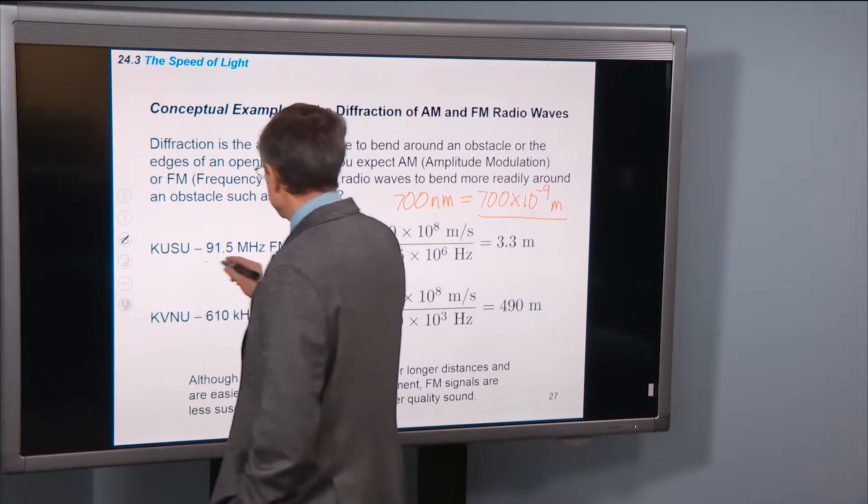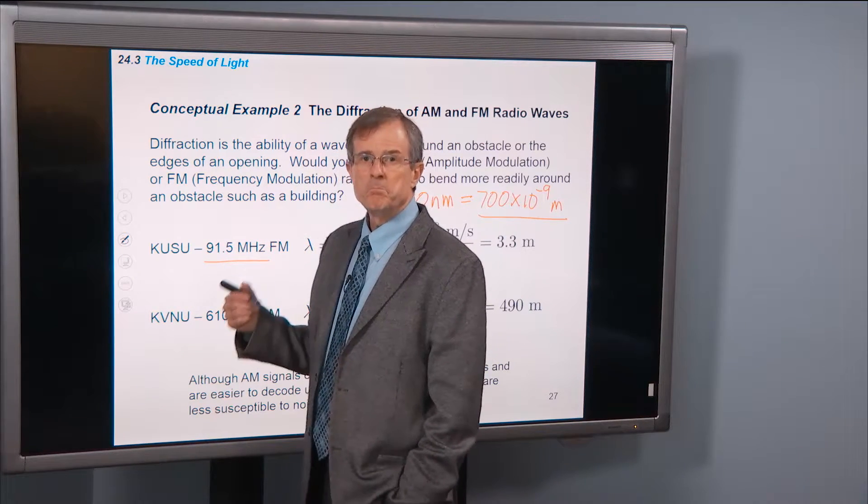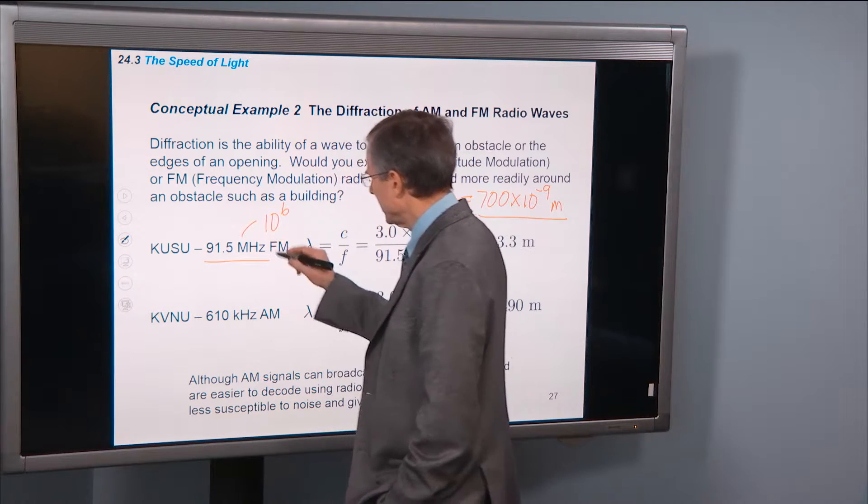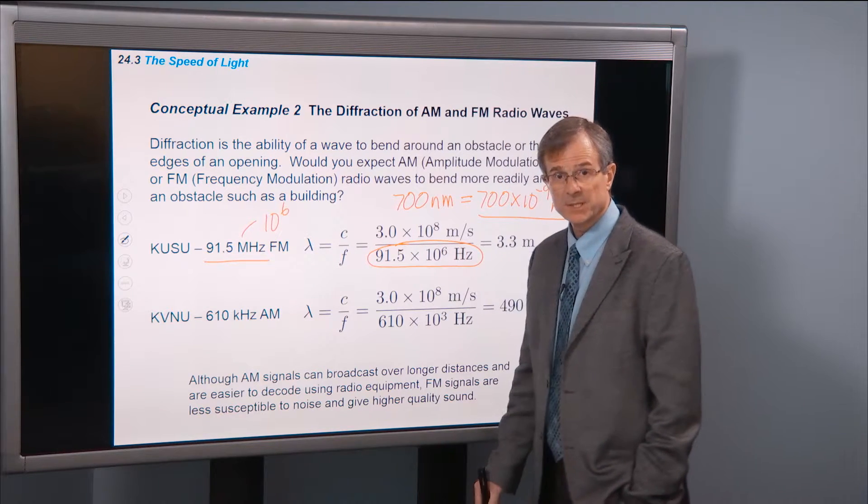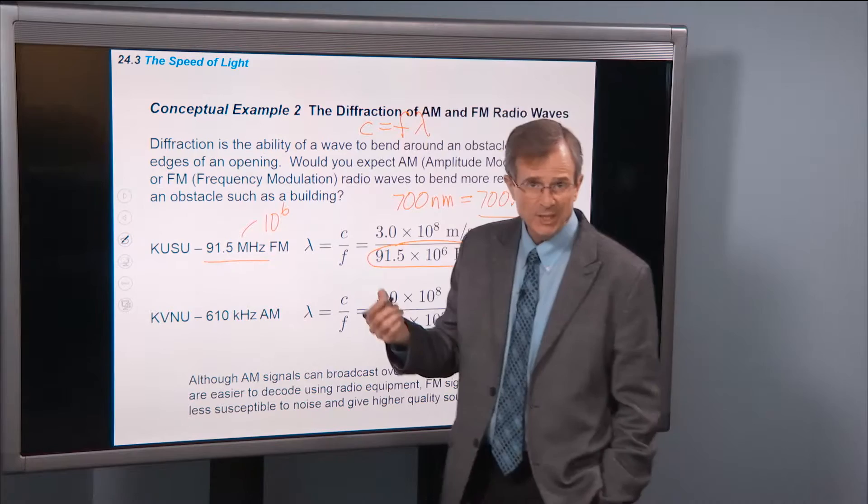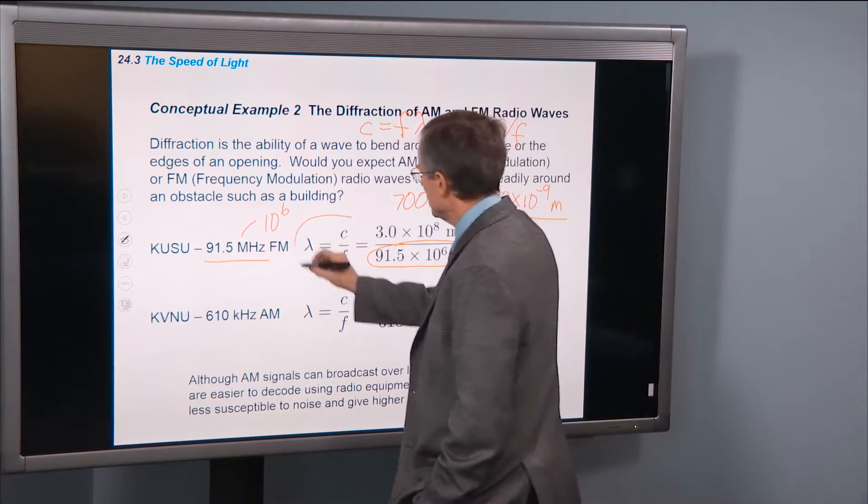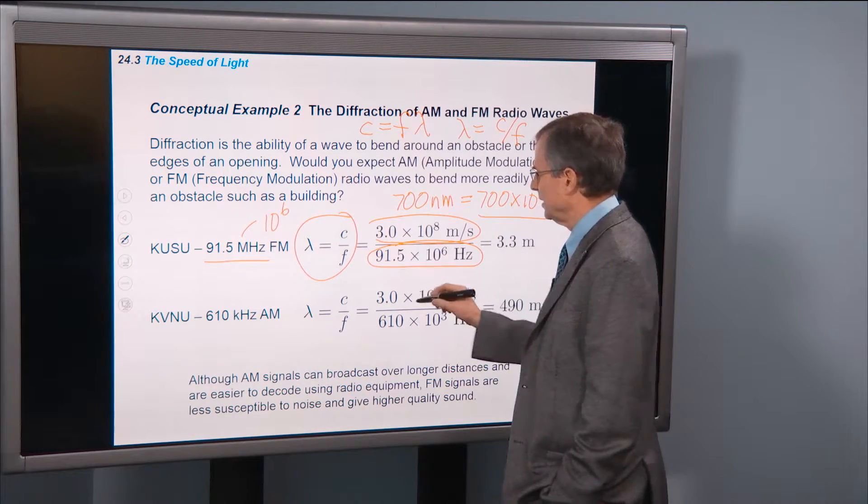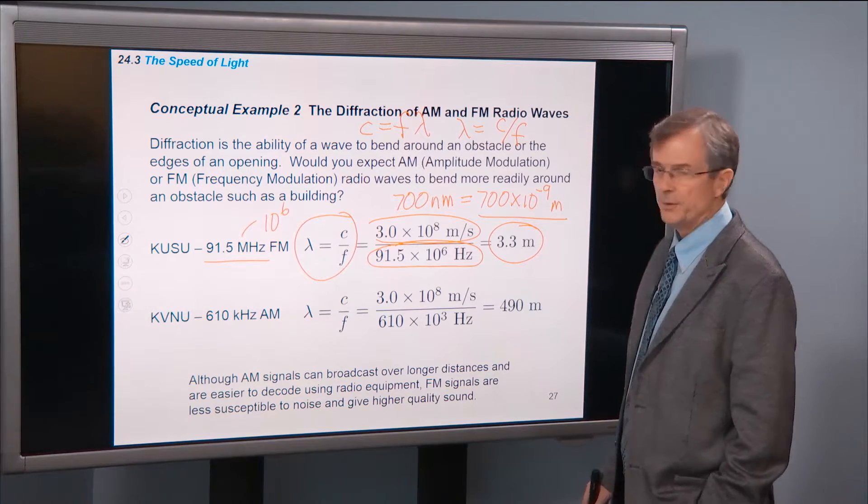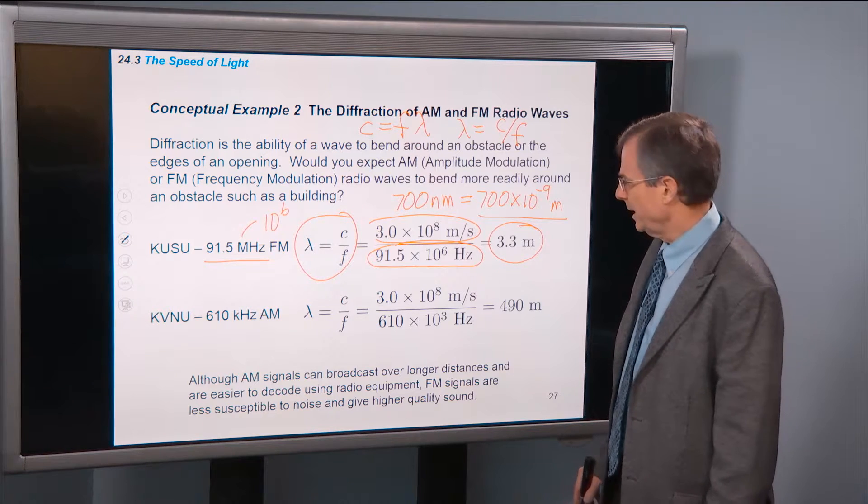So KUSU is an FM station. It broadcasts at 91.5 on the FM dial. What FM dials read is megahertz. What's a mega? 10 to the 6. So this is 91.5 times 10 to the 6 hertz. There's that number expressed in physics terms. The wavelength is related to the speed and frequency, as you remember, c equals f lambda. Same as v equals f lambda. We're going to solve that for lambda by dividing both sides by f. So that's this equation here. We're going to take the speed of light in the numerator, divided by the frequency of that KUSU FM, and we get a wavelength of 3.3 meters. So these radio waves, they're pretty long. They're about the size of this room for FM radio.